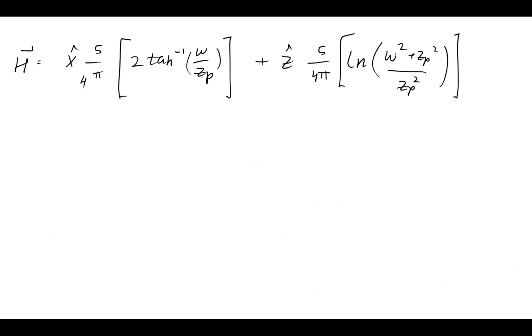Simplifying this even more, we now have an expression for the magnetic field H at this point zp, which is our point of interest. The x direction has an arc tangent, the z direction has a natural log. You could perhaps simplify this in a number of different ways, but this is a final result that does not contain any integral expressions.